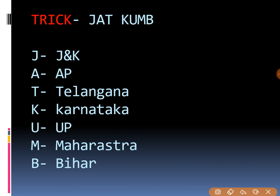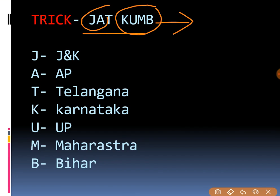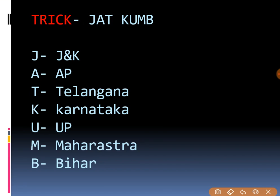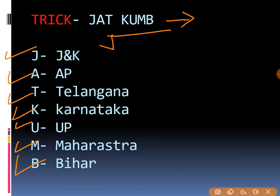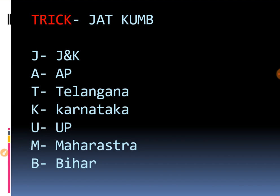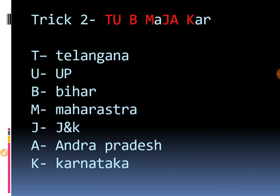The first trick is 'Jath Kumbh' — Kumbh from Kumbh Mela and Jath from the people of Haryana. Written vertically: J for Jammu Kashmir, A for Andhra Pradesh, T for Telangana, H for — K for Karnataka, U for UP, M for Maharashtra, B for Bihar. It's a simple trick to remember all seven states.